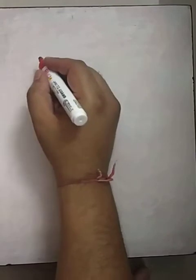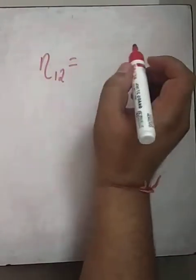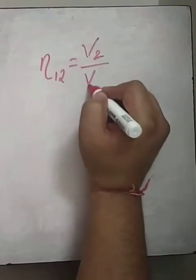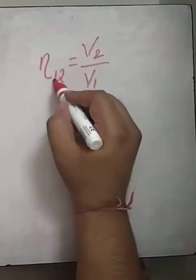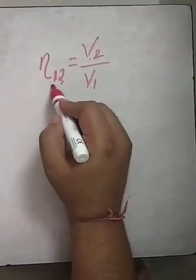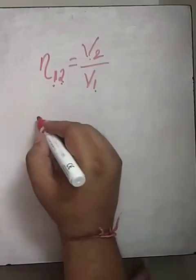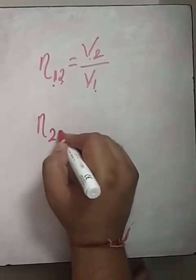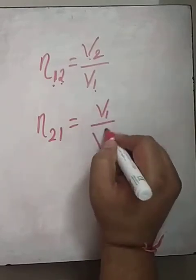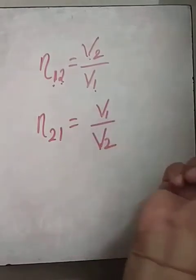The numeric formulas are very simple. The refractive index of medium 1 with respect to medium 2 is the speed of light in medium 2 divided by the speed of light in medium 1 — the term written below is in the denominator. Similarly, the refractive index of medium 2 with respect to medium 1 is the speed of light in medium 1 divided by the speed of light in medium 2.